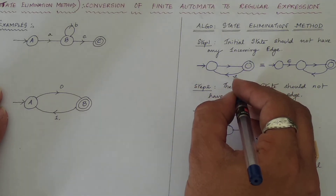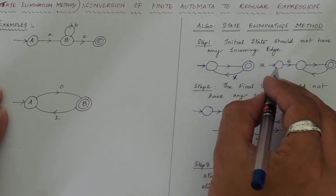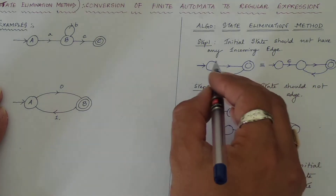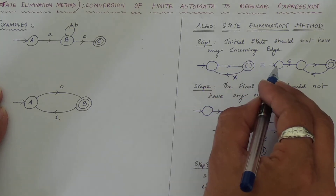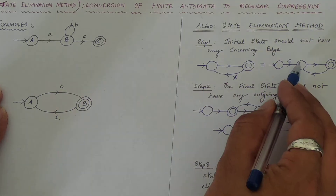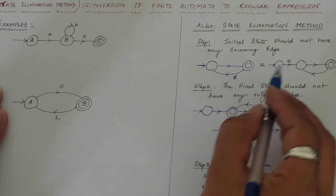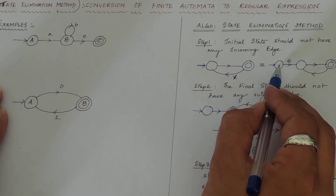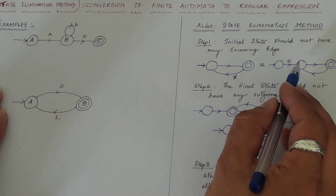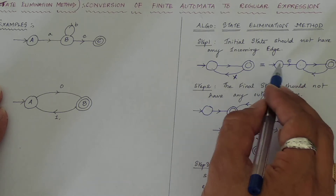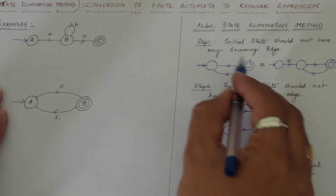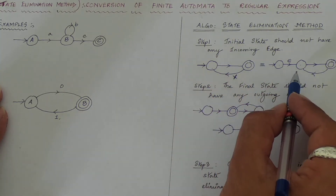To eliminate this, you need to make one more initial state — a new initial state — and from that new initial state you have to make the original one a normal state. How? From the new initial state you take an epsilon transition to this particular state. And you will get a new initial state with no incoming edges. Epsilon transition means no transition, so these two states are almost equivalent to each other.